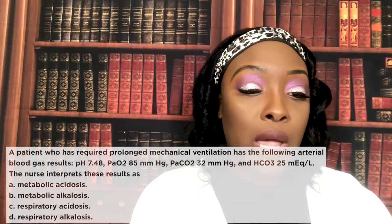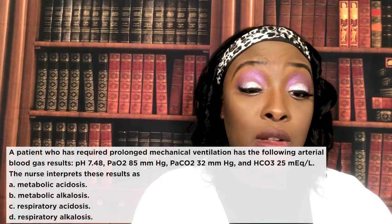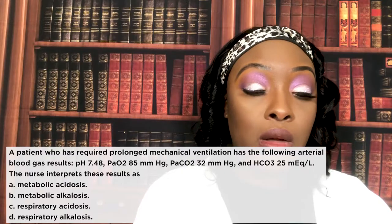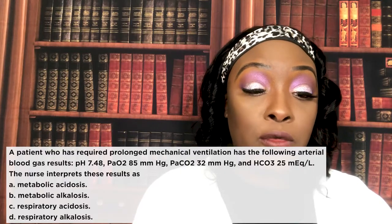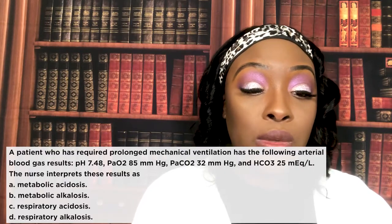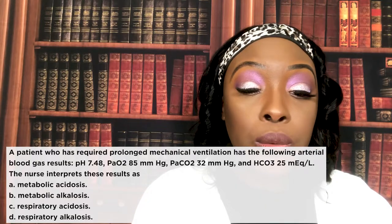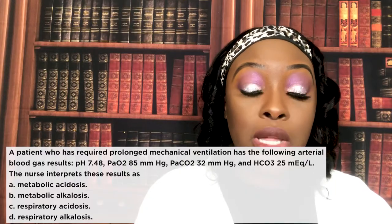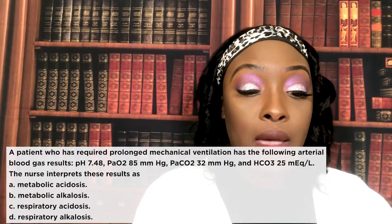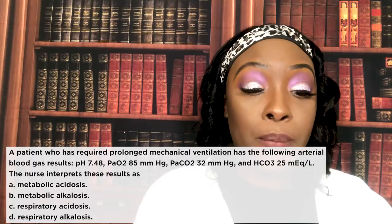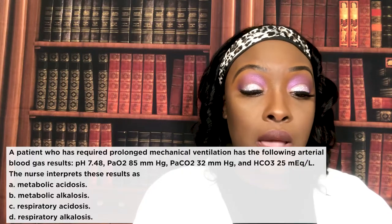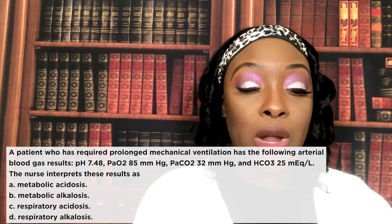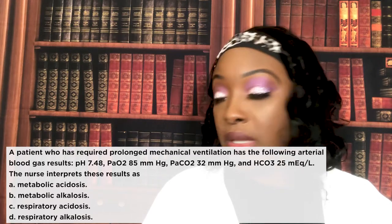A patient who has required prolonged mechanical ventilation has the following arterial blood gas results: pH 7.48, PaO2 85, PaCO2 32, and bicarb 25. The nurse interprets these results as: A) metabolic acidosis, B) metabolic alkalosis, C) respiratory acidosis, or D) respiratory alkalosis.